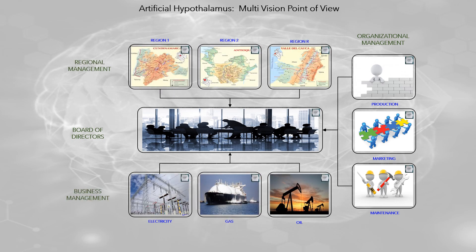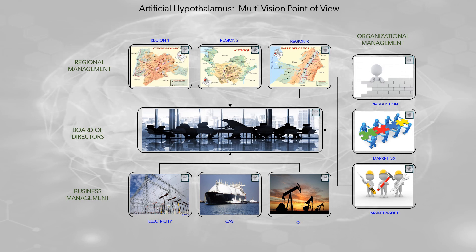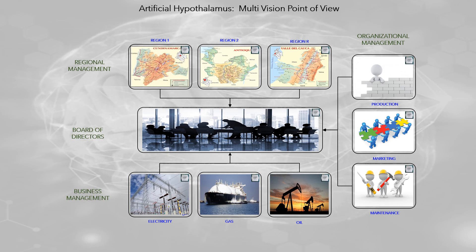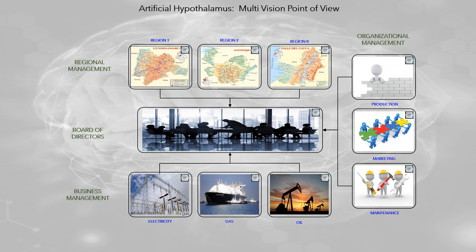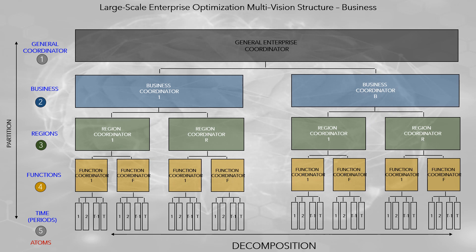From the point of view of traditional partitioning methodologies, such as standard Benders, you need to choose a point of view — a criterion — to begin the partitioning process; in this case there are three possibilities. The partitioning process implies that the problem from one point of view is represented with several models, depending on the number of entities. For the business case, three models are required: electricity, gas, and oil. Partitioning and decomposition of a system can occur in multiple ways without there being a mathematical reason to select one as the best.